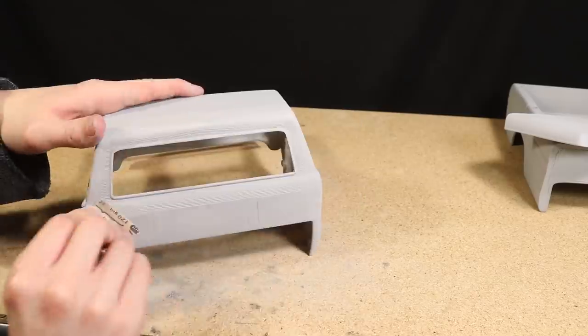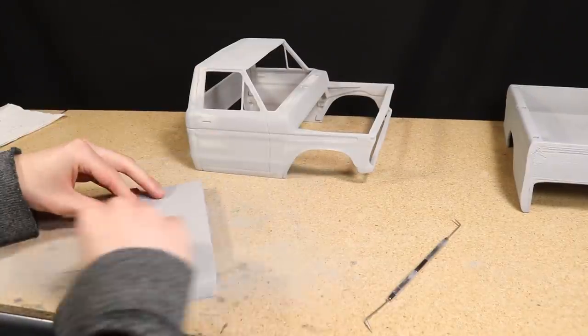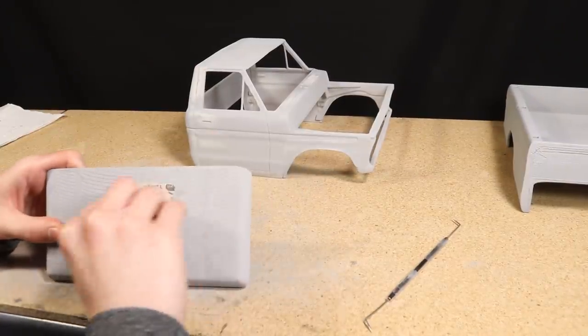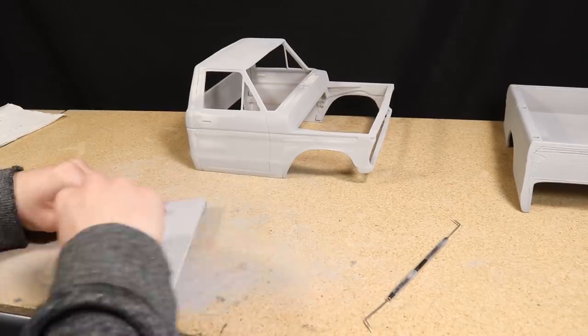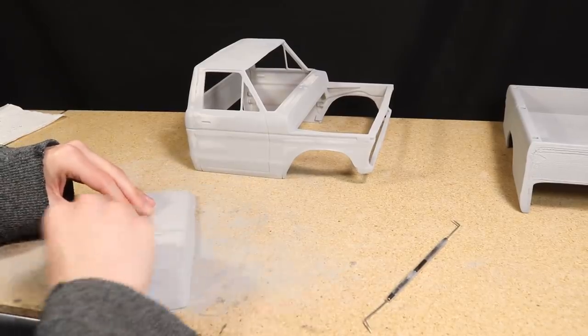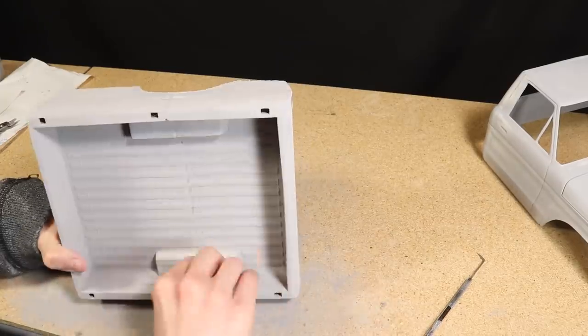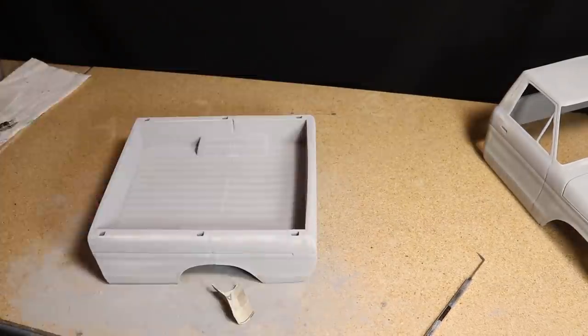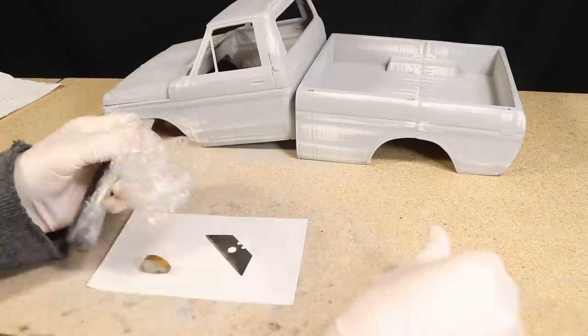As I've mentioned previously I'm not going for a brand new shiny look with either of these bodies so I'm not going to worry about trying to remove every little imperfection. There were some sections I did want to improve however just like with the previous body so I once again used some Milliput to fill these sections.